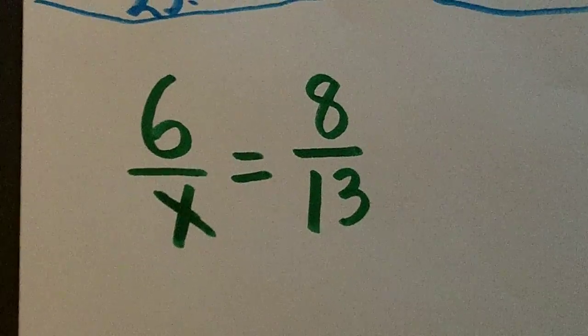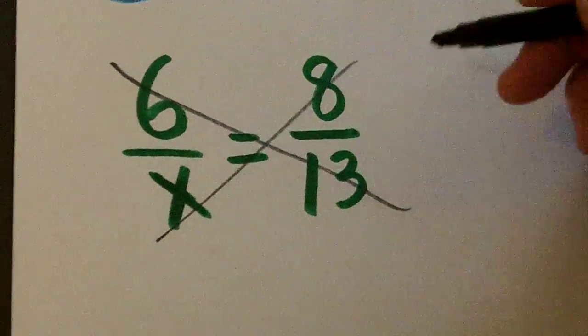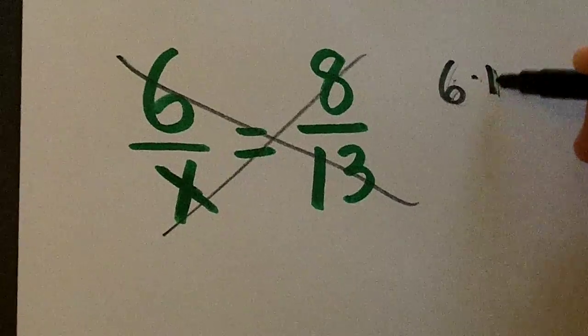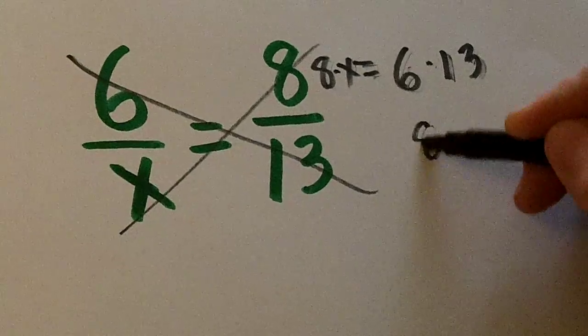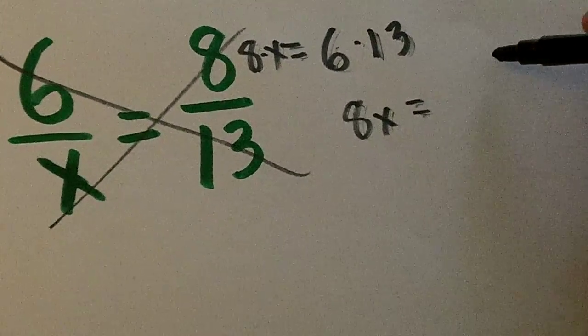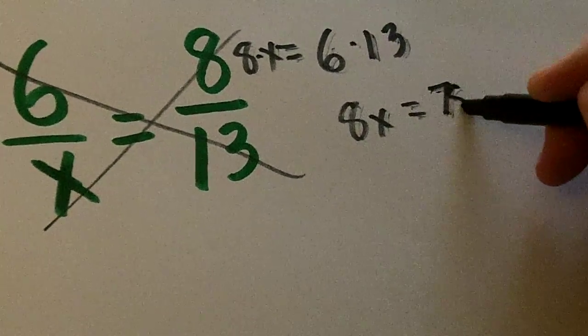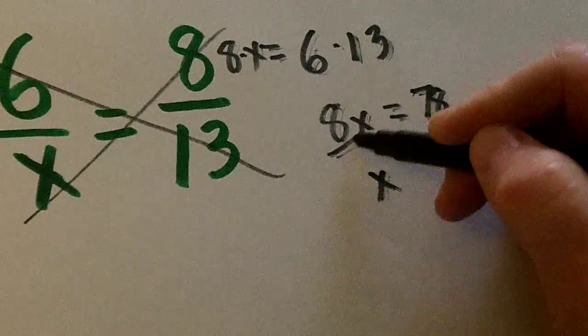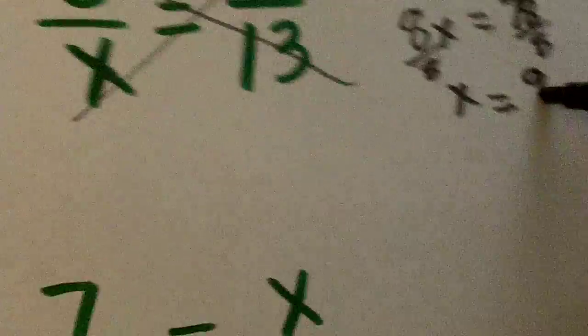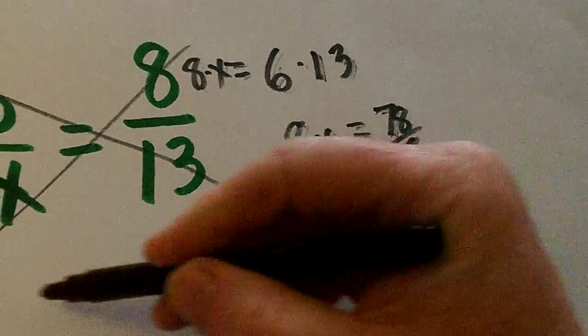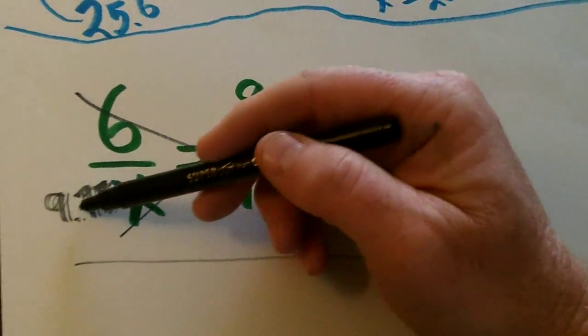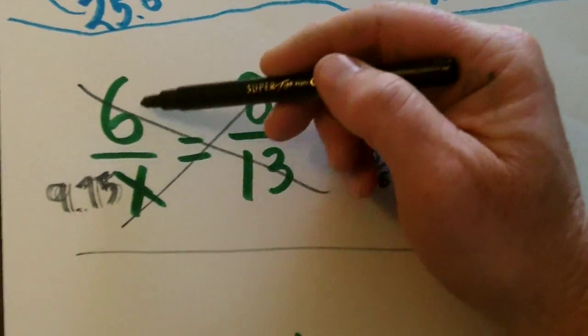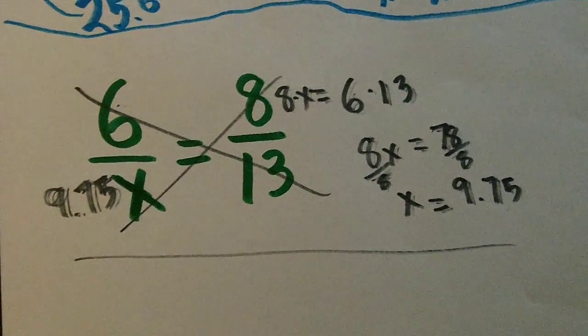Let's go to this one here. We can't reduce. So we get 6 times 13 is equal to 8 times X. 8X is equal to 78. And when we divide by 8, we get X is equal to 9.75. Now, 13 is a little under double of 8. 9 and 3 fourths is a little under double of 6. So that makes sense.